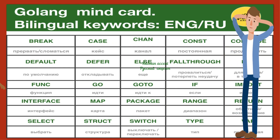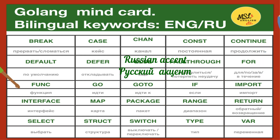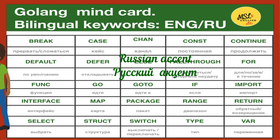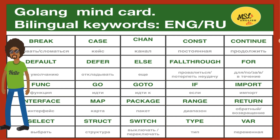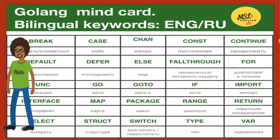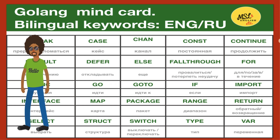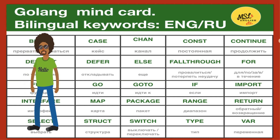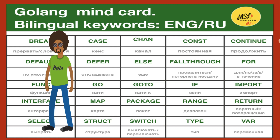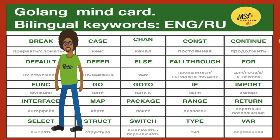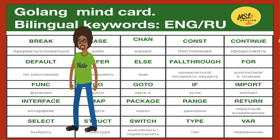Parni. I will speak with my Russian accent. Break. Case. Chan. Constant. Continue. Default. Defer. Else. Fallthrough. For. Func. Go. Goto. If. Import. Interface. Map. Package. Range. Return. Select. Struct. Switch. Type. Var.